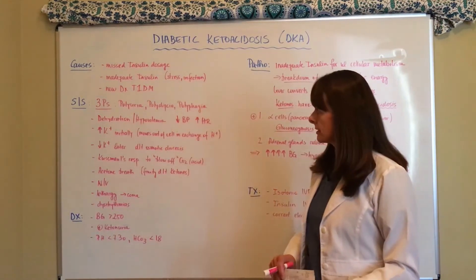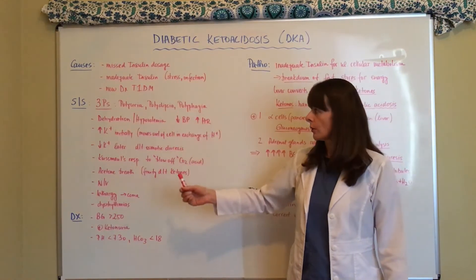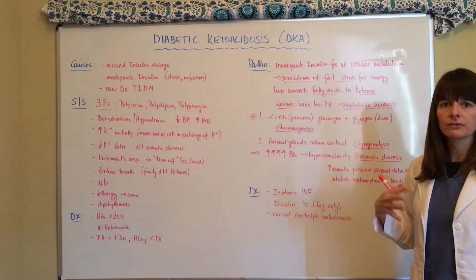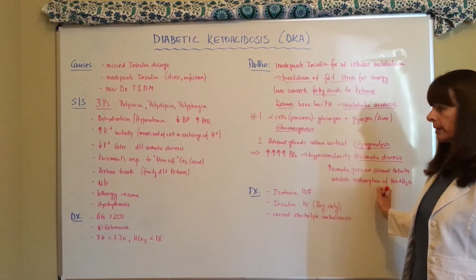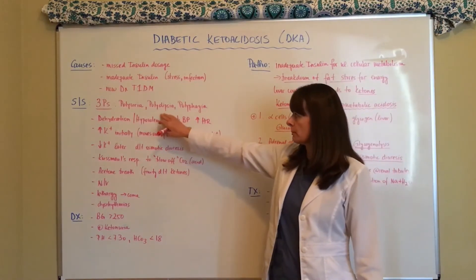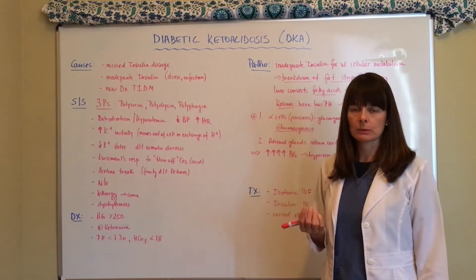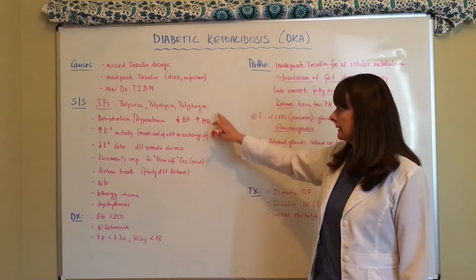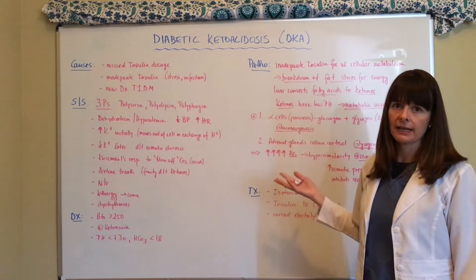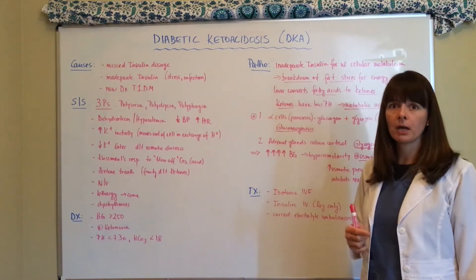Now let's look at signs and symptoms. We have the three Ps: polyuria, polydipsia, and polyphagia. With osmotic diuresis, the body tries to get rid of fluid and cannot reabsorb sodium and water, causing diuresis and making the patient very dehydrated. The patient will also be very thirsty because they are urinating frequently, so the thirst mechanism kicks in. And they'll be very hungry — polyphagia — because there is no glucose being used; the body is using fatty acids for breakdown, so patients will feel starving.